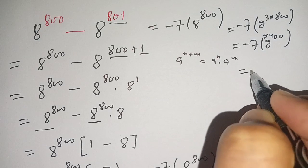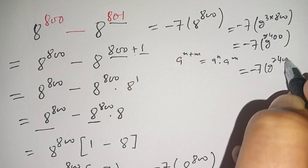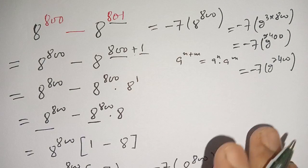Thus it is equal to minus 7 times 2 power 2400, which is for tutorial problems.